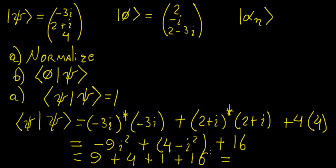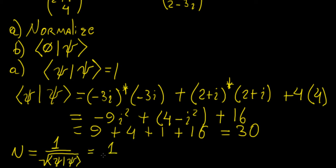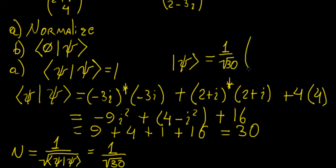Since i² = −1, we get 9 + 4 + 1 + 16, which adds up to 30. This is clearly not equal to 1, so we need to normalize. The normalization constant is defined as 1 over the square root of the inner product, so in this case it's 1 over √30. The normalized eigenfunction psi is just the original elements (−3i, 2+i, 4) multiplied by 1/√30.